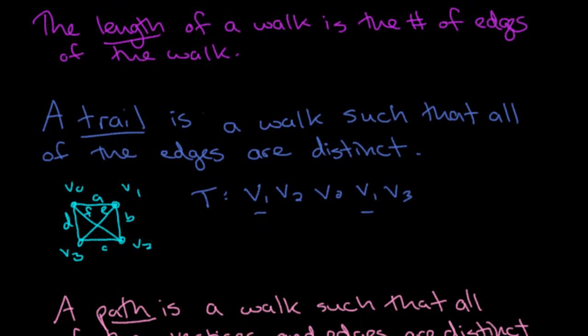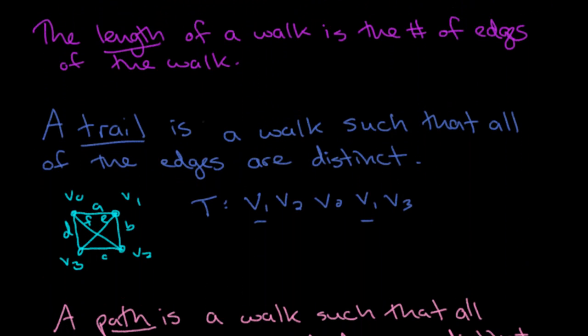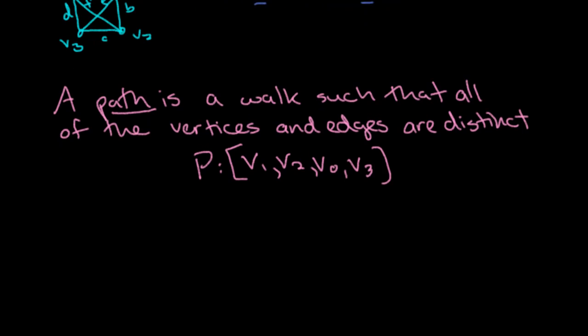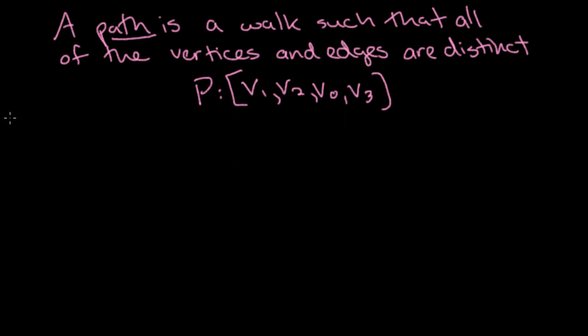And in all of these examples, the length is the number of edges. So the length of a trail is also the number of edges, and the length of a path is also the number of edges. And there's one more quick definition.